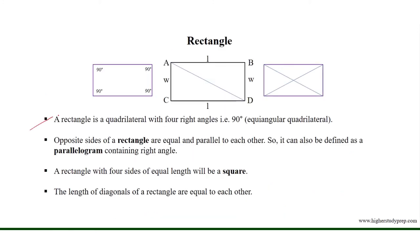A rectangle is a quadrilateral with 4 right angles, that is 90 degrees, so it is also called an equiangular quadrilateral. Opposite sides of a rectangle are equal and parallel to each other, so it can also be defined as a parallelogram containing right angles.